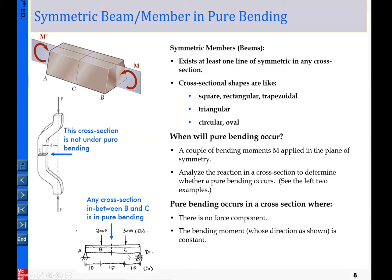Similar to our previous example, only the portion BC is under pure bending. For portion BC under pure bending, we assume the whole beam is symmetric. At point C, that section is not under pure bending because there is not only a reaction moment but also a vertical reaction force. That is a different topic — what we call eccentric loading — to be addressed in a later section.